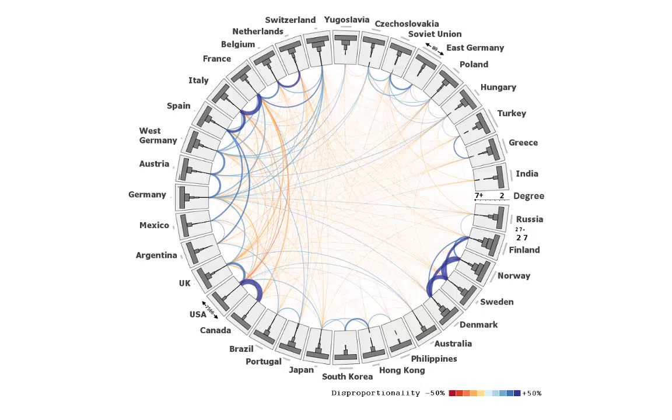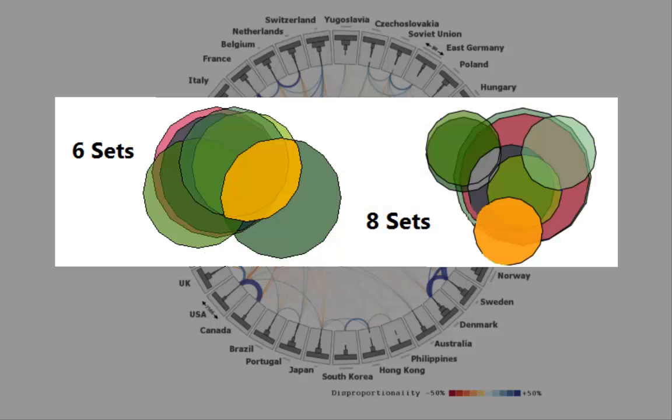Radial sets can depict about 30 to 40 sets with sufficient resolution revealing how they overlap and how the elements are distributed in them. This limit is significantly higher than the severe limit of Euler diagrams.